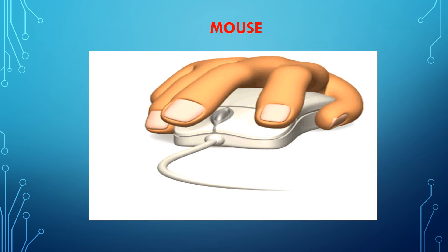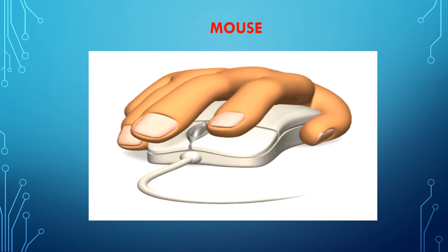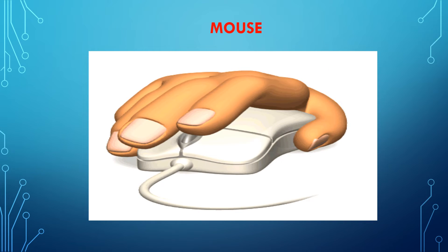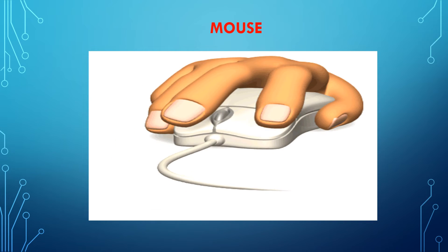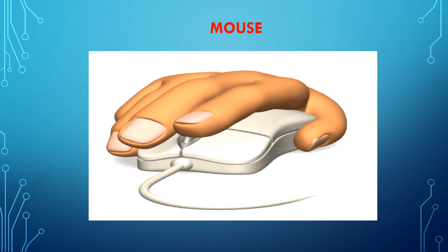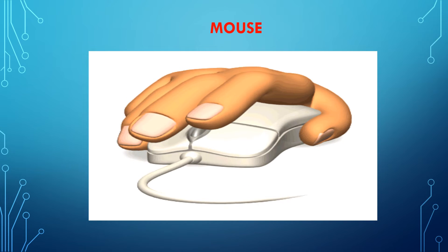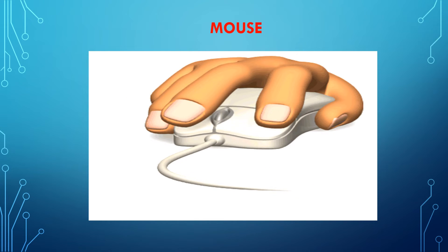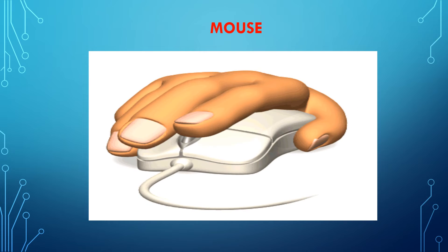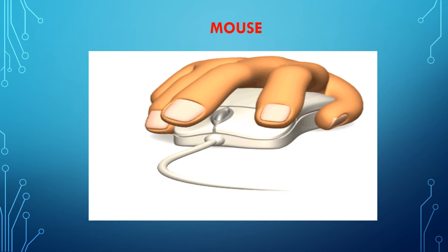This is a mouse. A mouse has two buttons and a scroll wheel. It is used to draw, paint, select, and open files on the monitor.